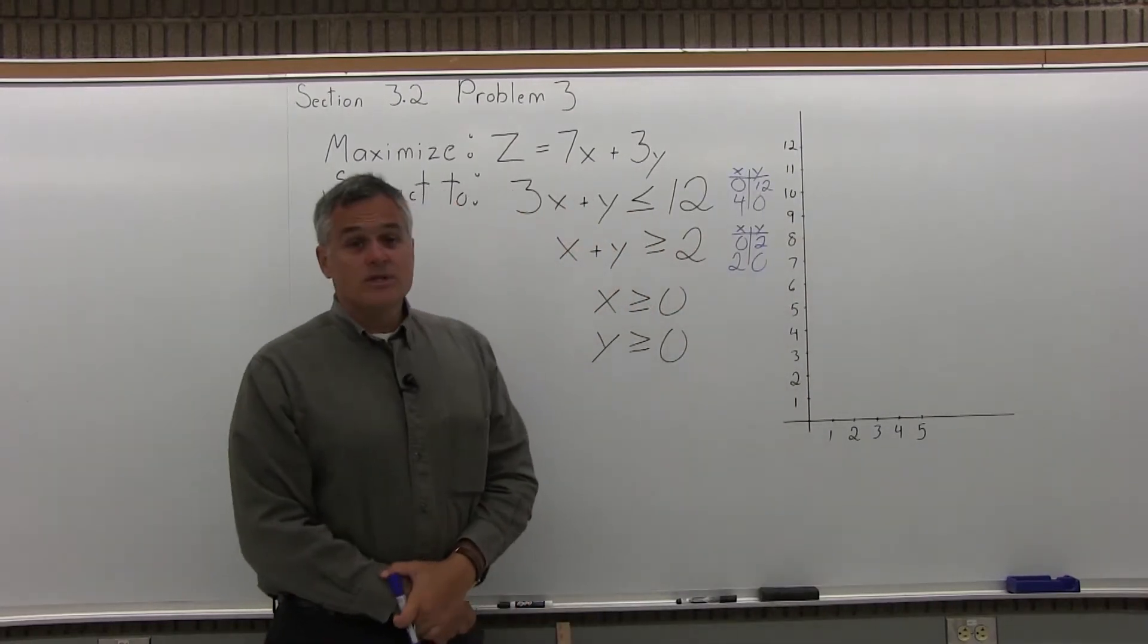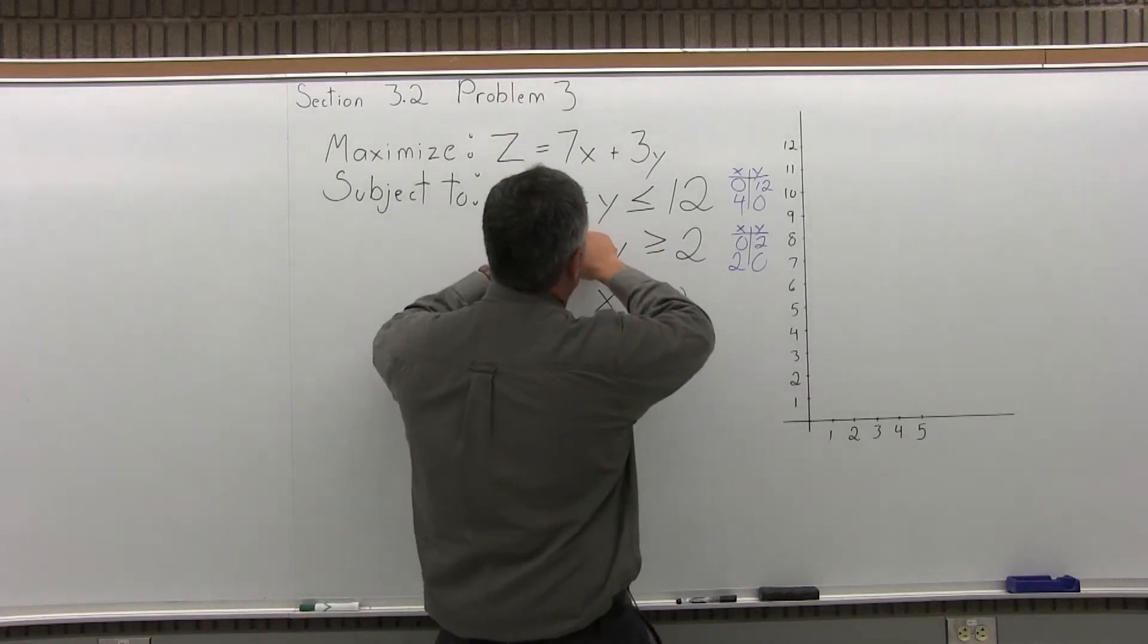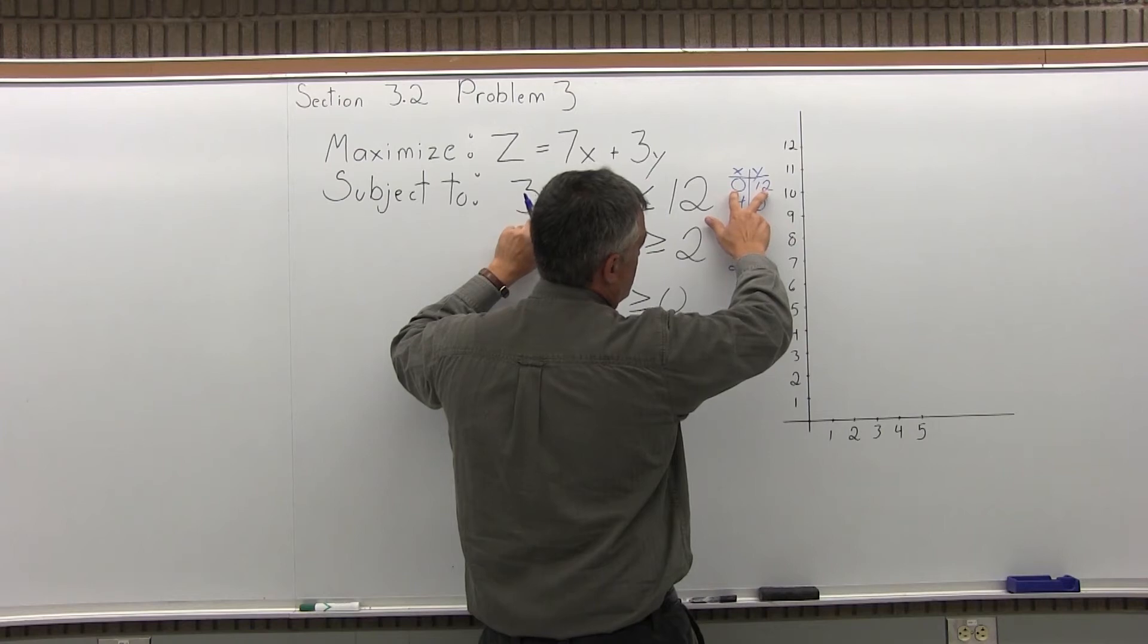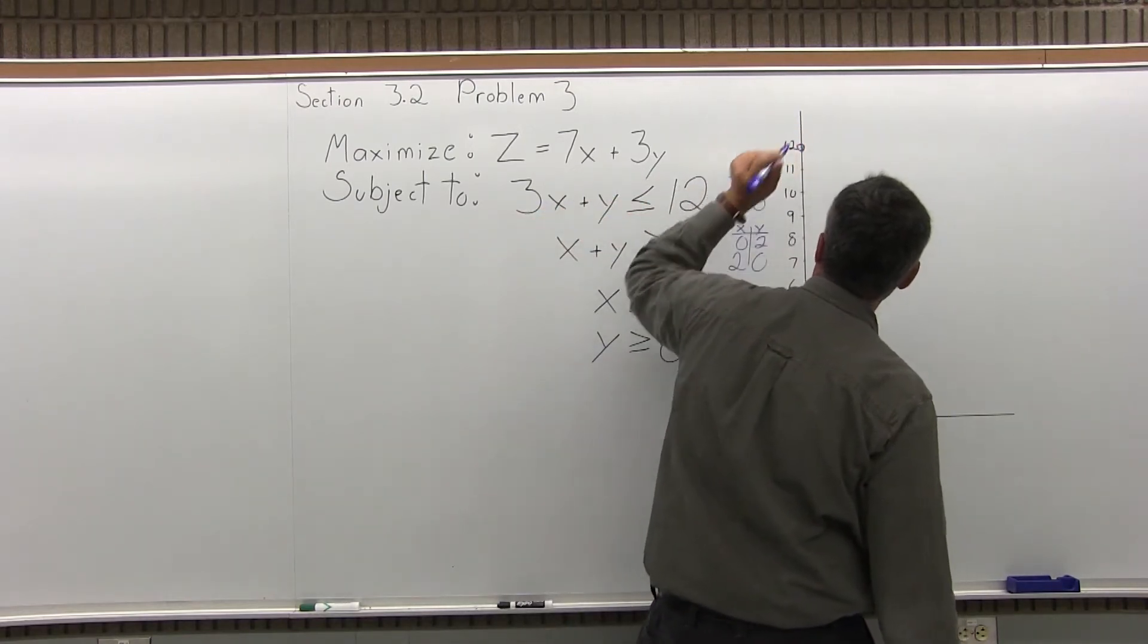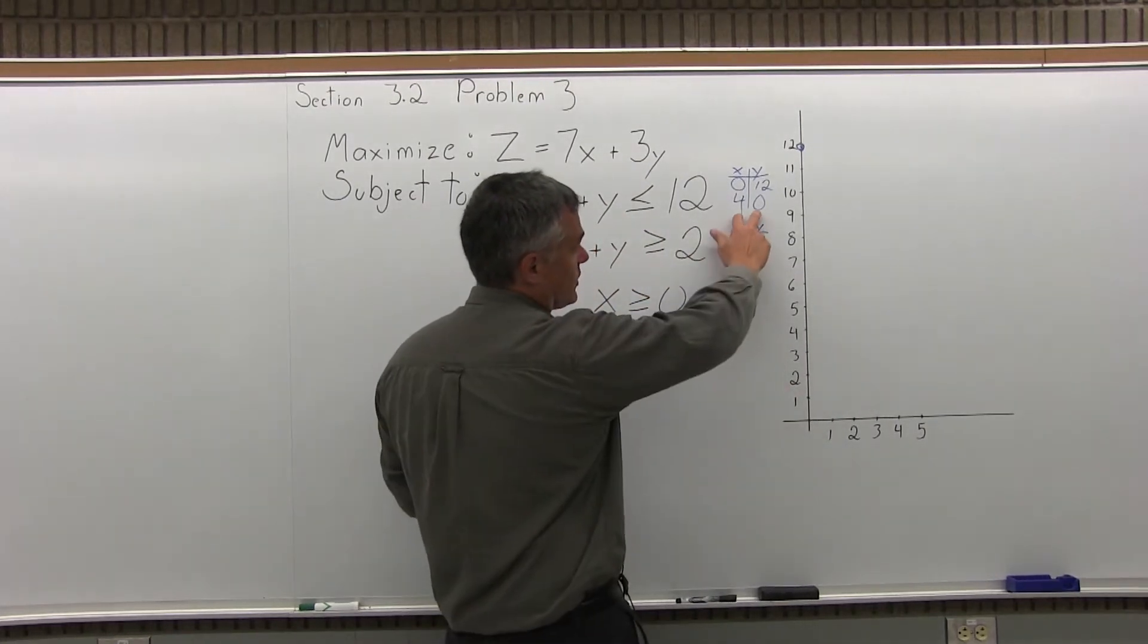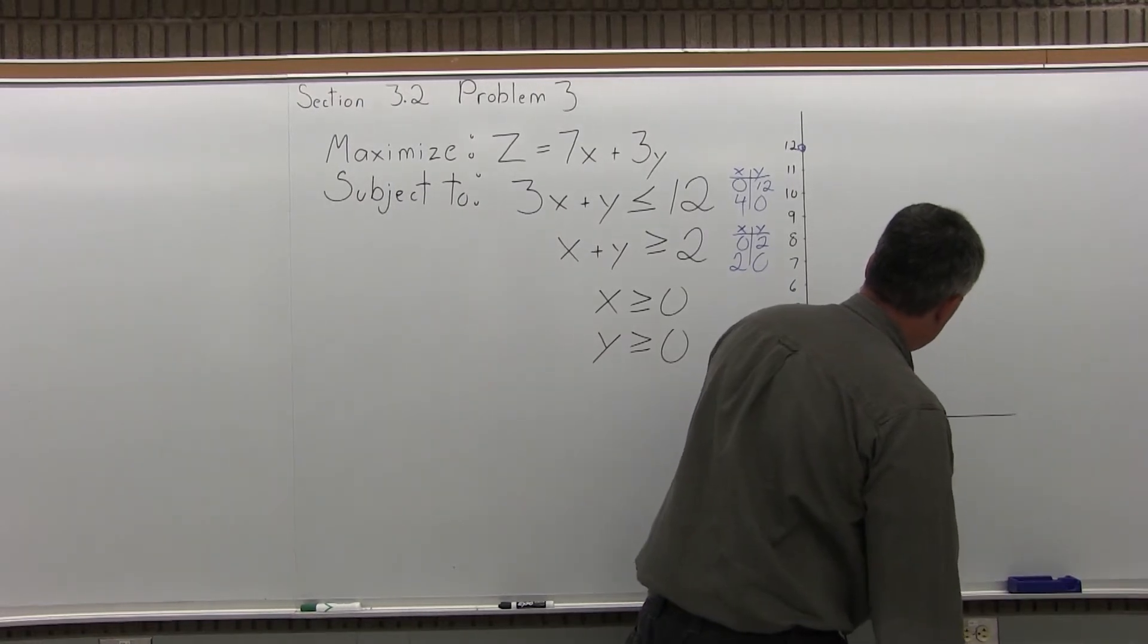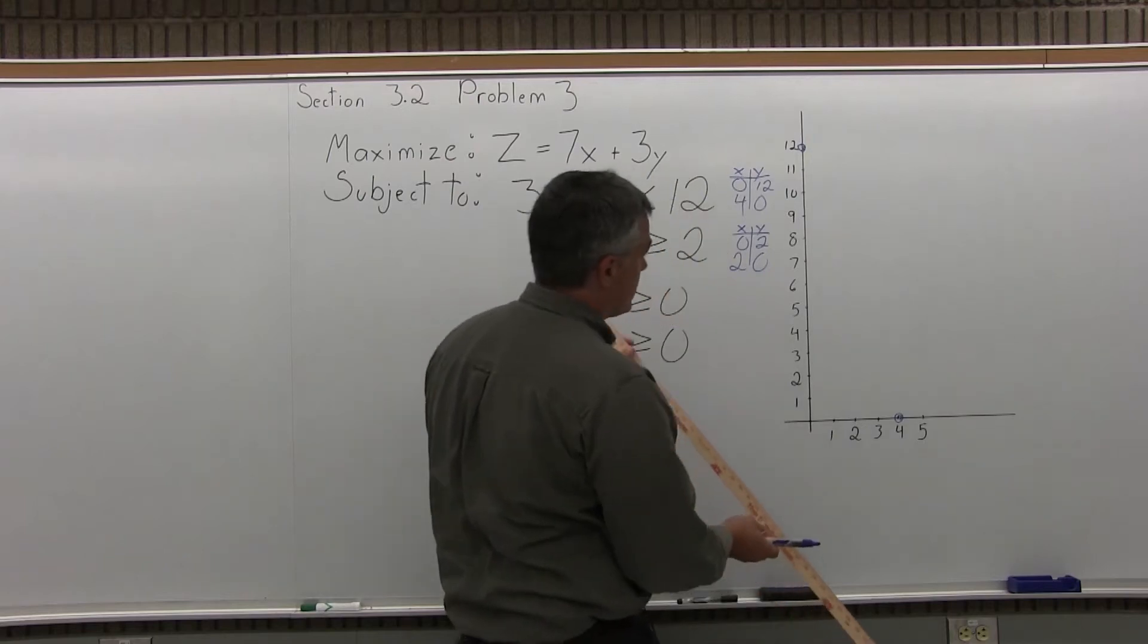Now I want to put those on the graph and shade them correctly. So the first linear inequality with the 12 at the end, I want to plot the point 0, 12. That's over 0, up 12, which is up there. The other point is 4, 0. Over 4, up 0. I put that on the graph. And now I'm going to connect them with a straight line.